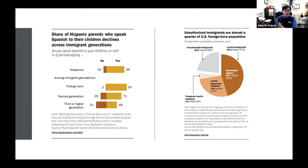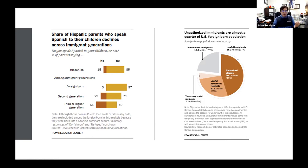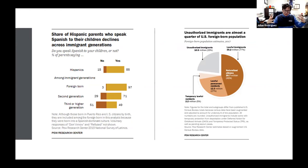We change through time. Most of the growth is happening because of children being born in the United States. What we're looking at here is the share of Hispanic parents who speak Spanish to their children and how it declines across immigrant generations. If you're foreign born, about 97% speak Spanish. But as we progress, we see it becomes roughly 50-50 by the third generation. The largest growth in the Hispanic population is in the third-generation Hispanic in the USA.